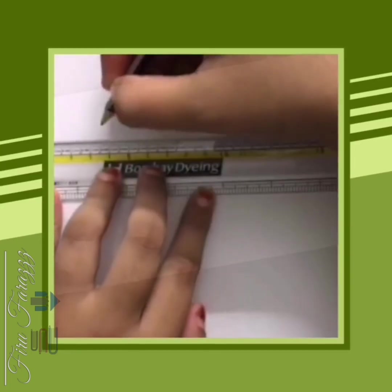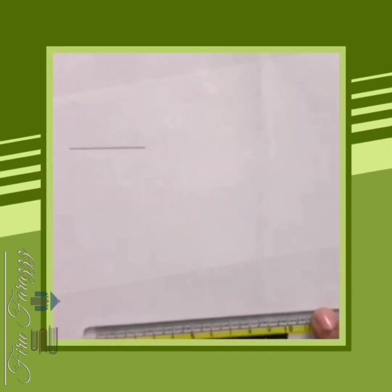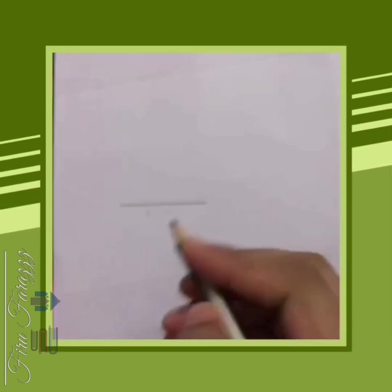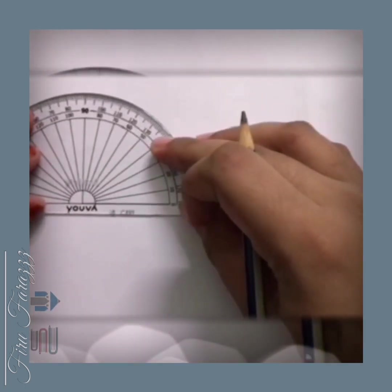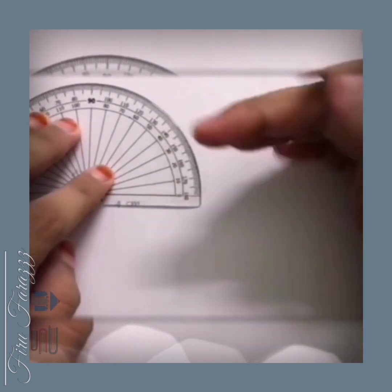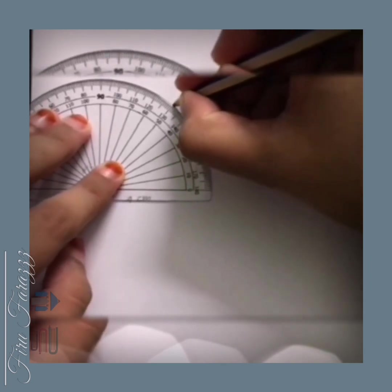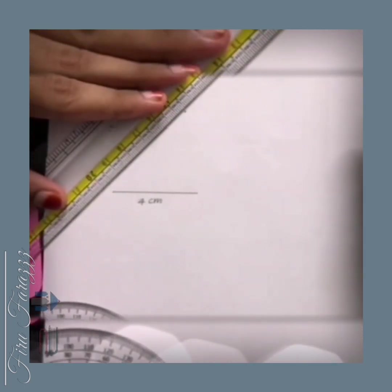First we have to draw 4 centimeters. Take a ruler and pencil and draw 4 centimeters. Here the line is 4 centimeters. Then take the protractor and measure 50 degrees. Here it comes to 50 degrees — mark the point at 50 degrees and draw a straight line to the marked point using a ruler.